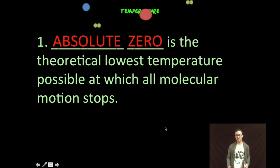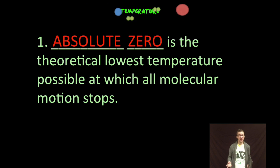Now, because there are no negative temperatures on the Kelvin scale, absolute zero or zero Kelvin is the theoretical lowest temperature possible. And at that point, all molecular motion stops. Everything has a kinetic energy of zero, theoretically.